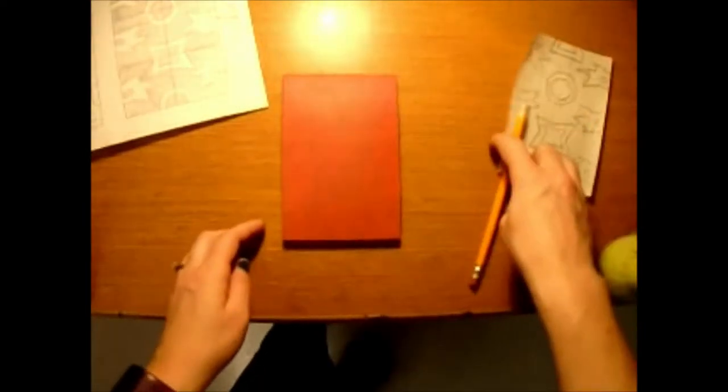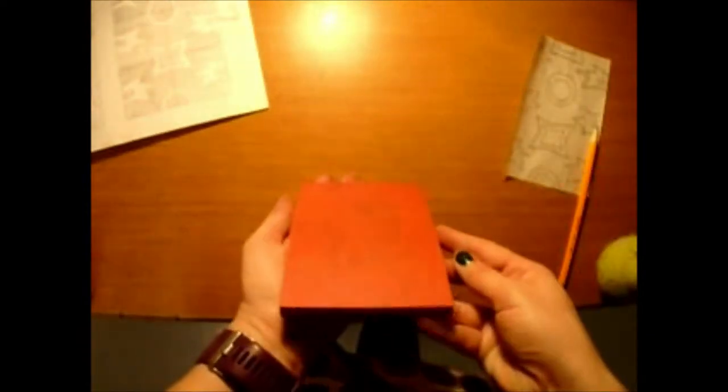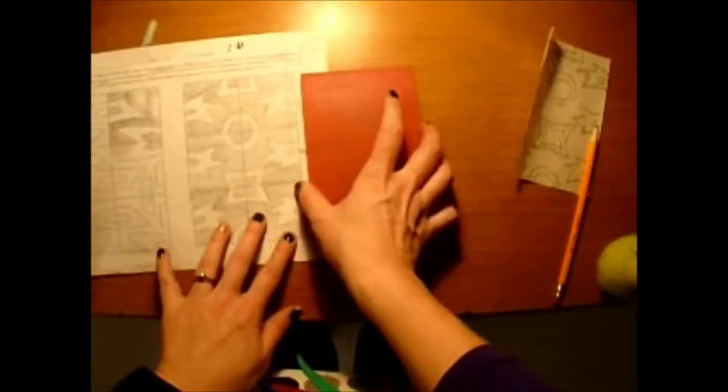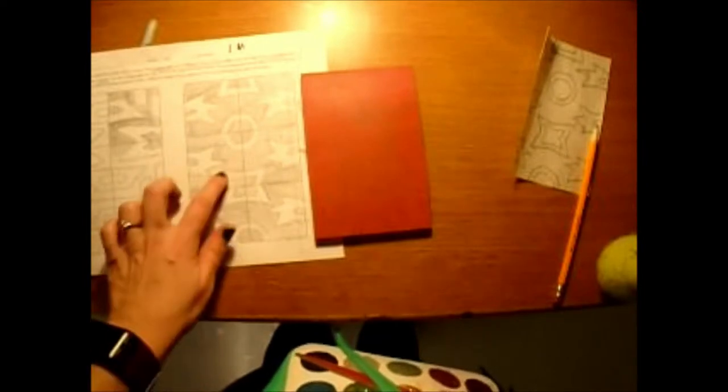So when you take your tracing paper off, you're going to see that it did make a print. It's copied on that rubber and you can see the design from here. So now what you're going to do is look at your rough draft drawing.